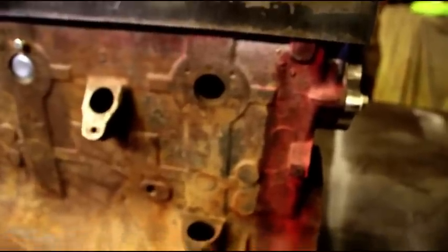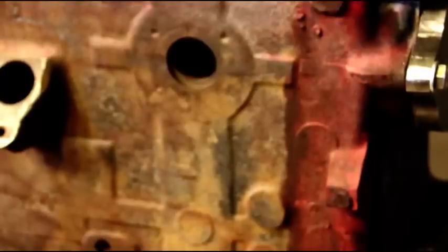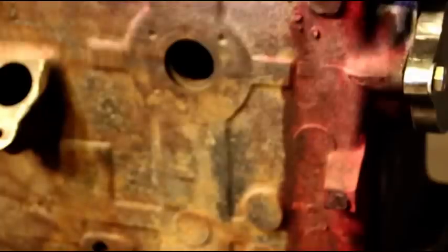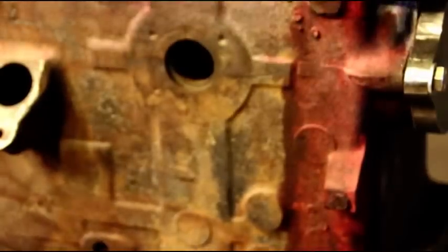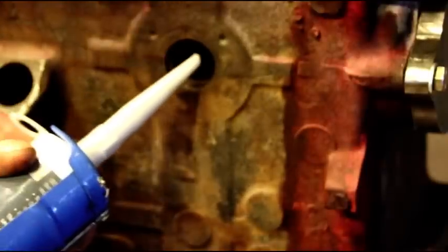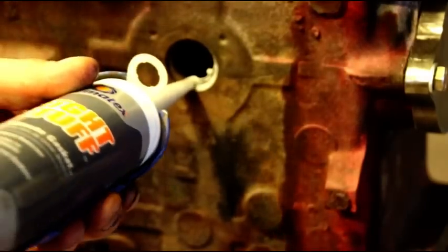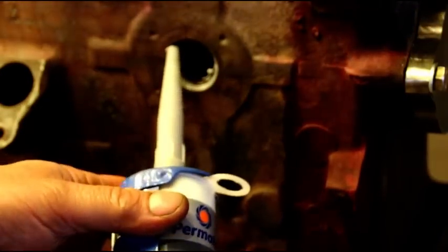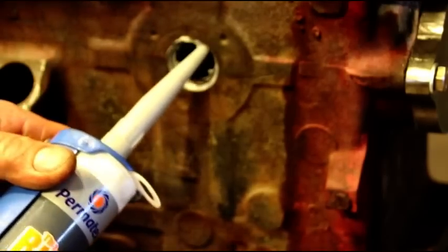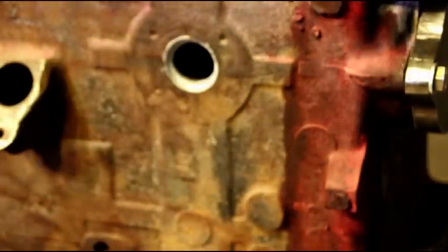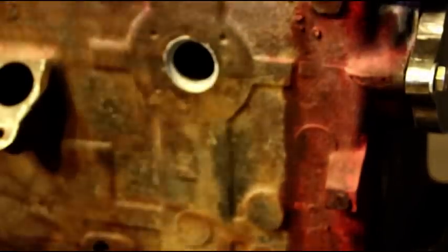Okay, I'm gonna try and show this to you without getting in the way of the camera. I like to take a little bit of sealer and put it in the hole. I'm using some right stuff, and they didn't have the black last time I got it, so this is just some gray. Same stuff, right stuff gasket maker. Just get some in that recess.